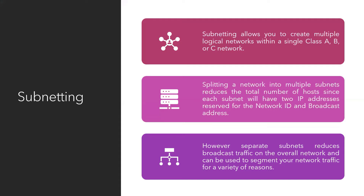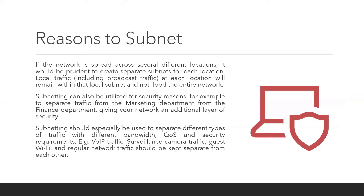Separate subnets reduce broadcast traffic on the overall network and can segment network traffic for various reasons. If a network spans several locations, it's prudent to create separate subnets for each location — local traffic including broadcasts stays within the local subnet. Subnets can also be used for security — for example, separating marketing and finance department traffic. Subnetting should especially be used to separate different types of traffic with different bandwidth, quality-of-service, and security requirements — such as VoIP, surveillance cameras, guest Wi-Fi, and regular network traffic.